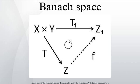If X and Y are normed spaces over the same ground field K, the set of all continuous K-linear maps T from X to Y is denoted by B(X, Y). In infinite-dimensional spaces, not all linear maps are continuous. A linear mapping from a normed space X to another normed space is continuous if and only if it is bounded on the closed unit ball of X.